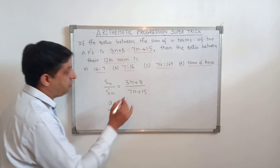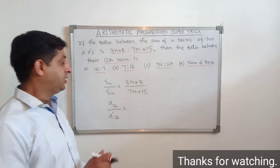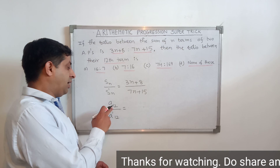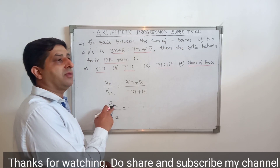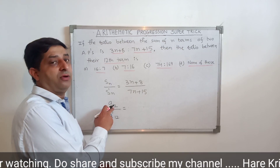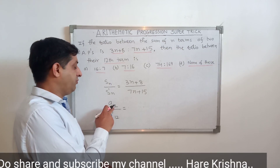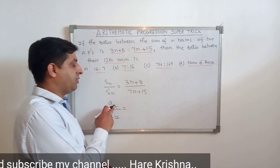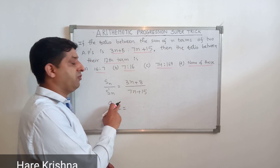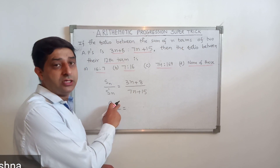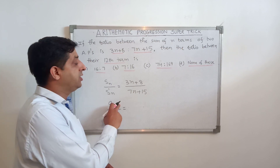Now what is the trick? You have to double this number and subtract 1 from it. So we double 12: 12 × 2 = 24, and 24 − 1 = 23.